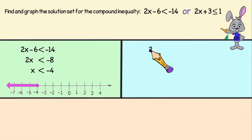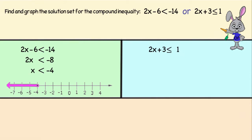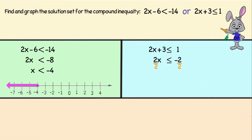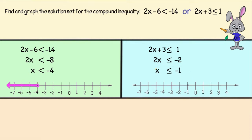Now let's solve 2x plus 3 is less than or equal to 1. First we'll add negative 3 to both sides, giving us 2x is less than or equal to negative 2. Then we will divide each side by 2, leaving us with x is less than or equal to negative 1. We're going to graph this, but this time we're going to be putting a closed circle on negative 1 since it is part of the solution set.